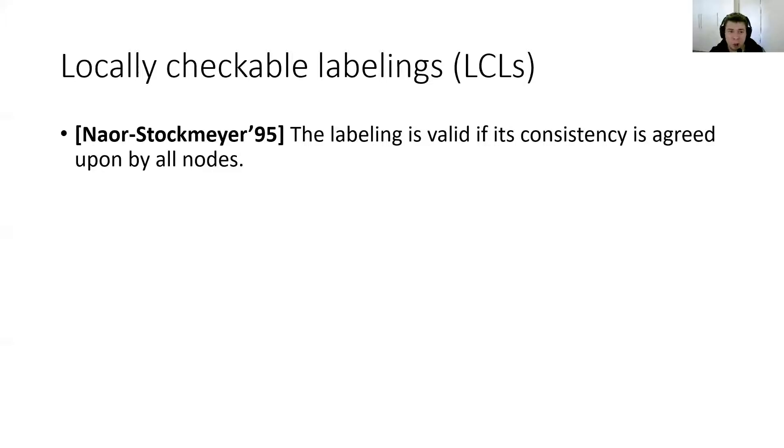Indeed, because finding a global solution is impossible most of the time, we try to look at tasks which have some notion of a local solution. In this work, we focus on locally checkable labelings—LCLs for short. This notion was introduced by Naor and Stockmeyer in 1995. Roughly speaking, we say that a labeling is an LCL if its validity can be checked by all the nodes locally. If all of them agree on the consistency of the labeling, then this labeling is correct globally. If one node does not agree, then this labeling is not correct.